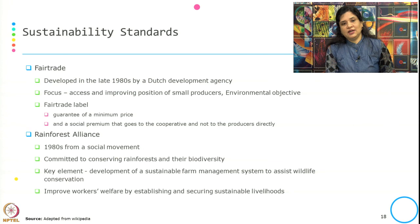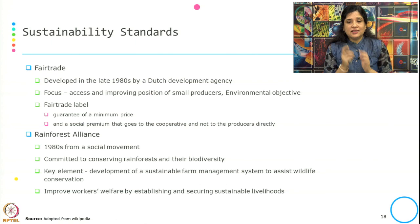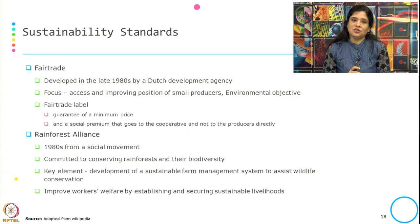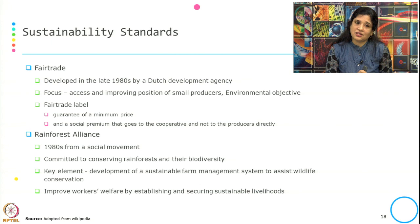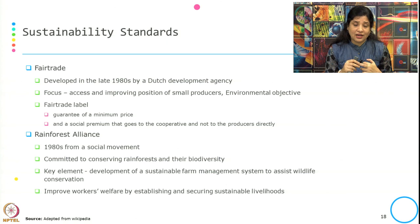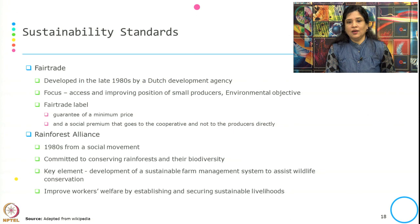Another well-known sustainability standard is Rainforest Alliance, which was created from a social movement in the 1980s. They are committed to conserving rainforests and their biodiversity. The key elements are: development of a sustainable farm management system to assist wildlife conservation, and to improve workers' welfare by establishing and securing sustainable livelihoods. Rainforest Alliance is mostly about conserving the rainforest, developing a sustainable farm management system for wildlife conservation, and increasing workers' welfare through sustainable livelihoods.